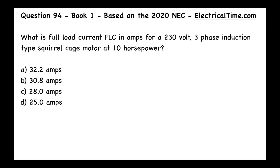This is question number 94 from book number one, based on the 2020 NEC from electricaltime.com. What is the full load current — the FLC in amps — for a 230-volt, three-phase induction type squirrel cage motor at 10 horsepower? Is it A) 32.2 amps, B) 30.8 amps, C) 28 amps, or D) 25 amps?